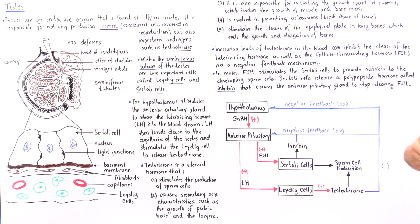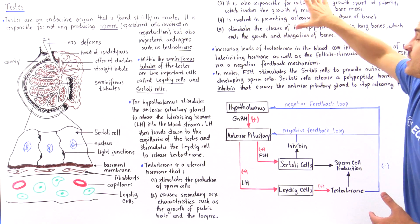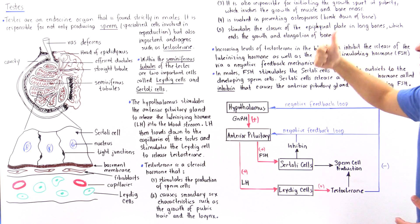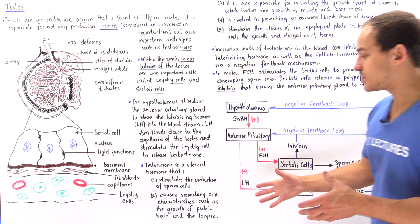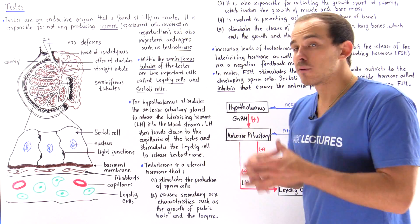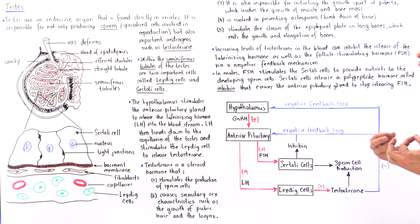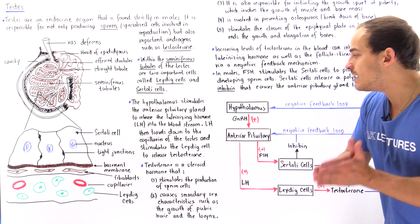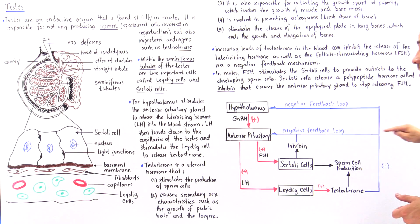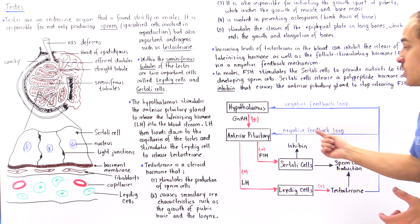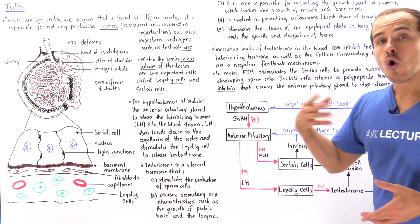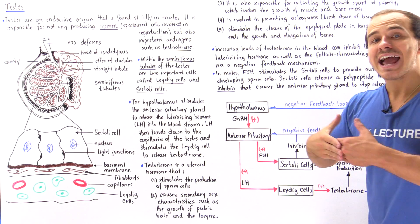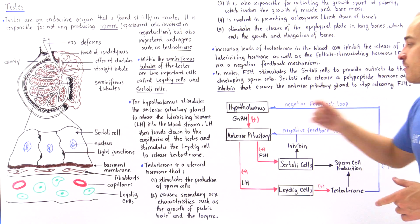At the same time, testosterone also causes these other different effects — for example, it is responsible for the growth spurt and for giving us our secondary characteristics such as an enlarged larynx, a deep voice, pubic hair, and other things of that nature. When the concentration of testosterone is very high, it can travel back to the hypothalamus and inhibit the release of GNRH. It can also inhibit the release of FSH and LH from the anterior pituitary, while the Sertoli cells can produce a protein hormone known as inhibin that negatively inhibits the release of FSH from the anterior pituitary gland.